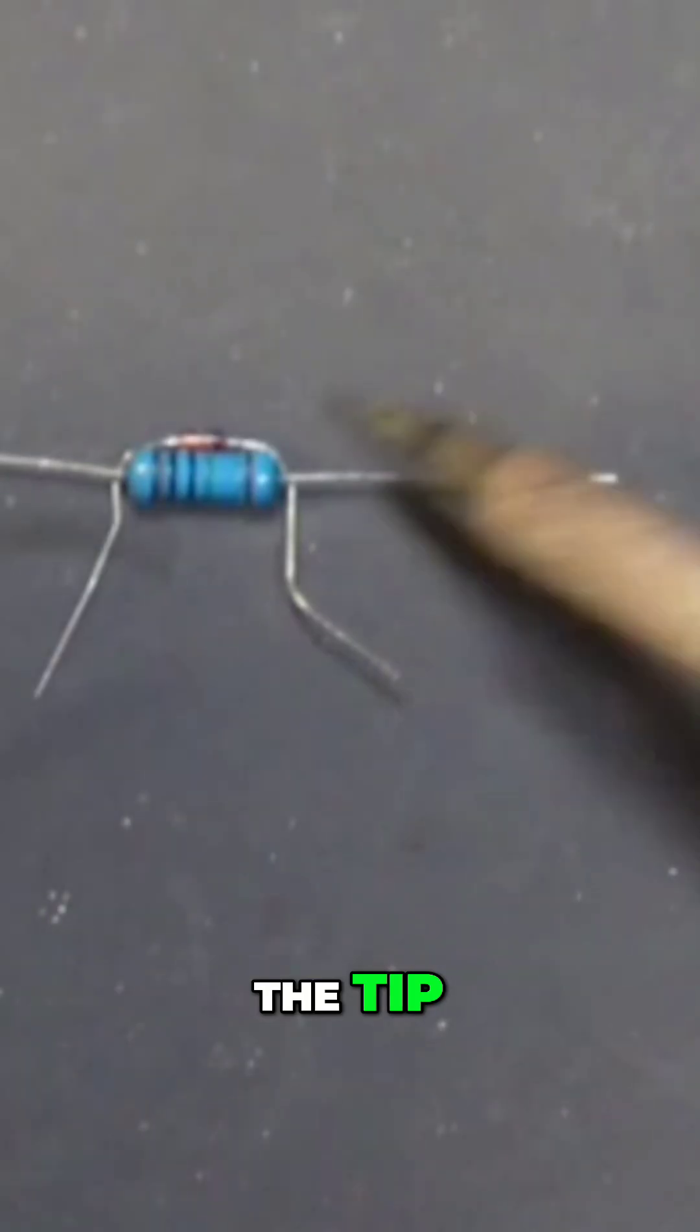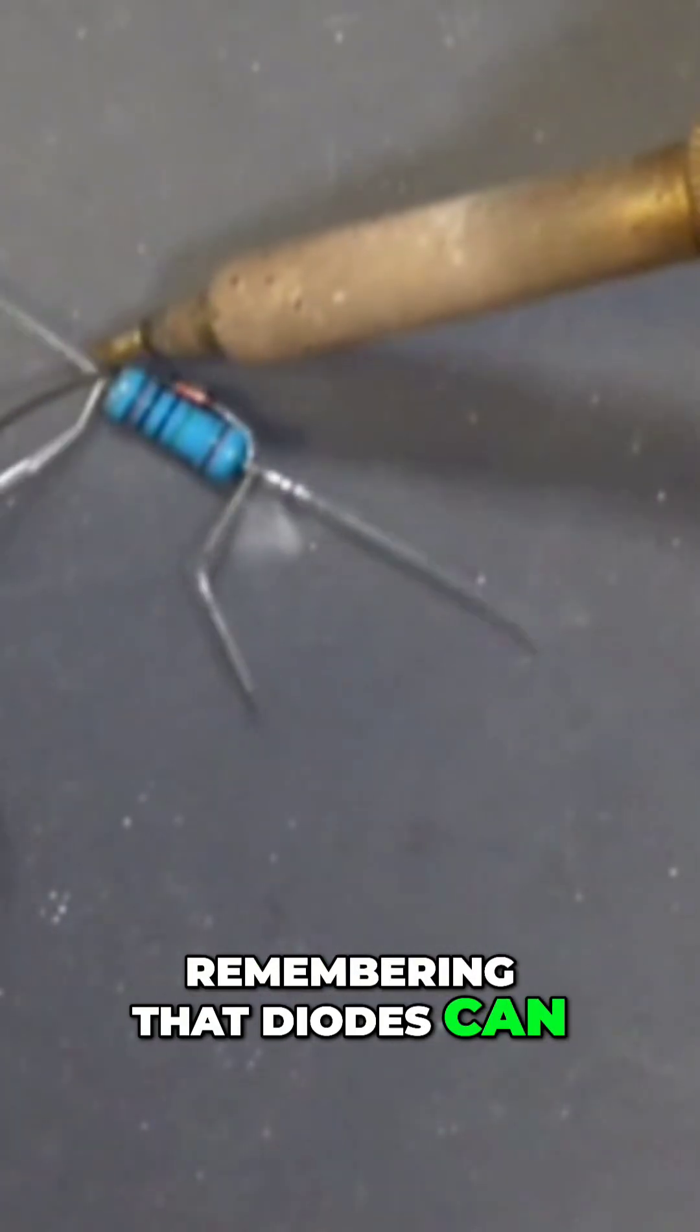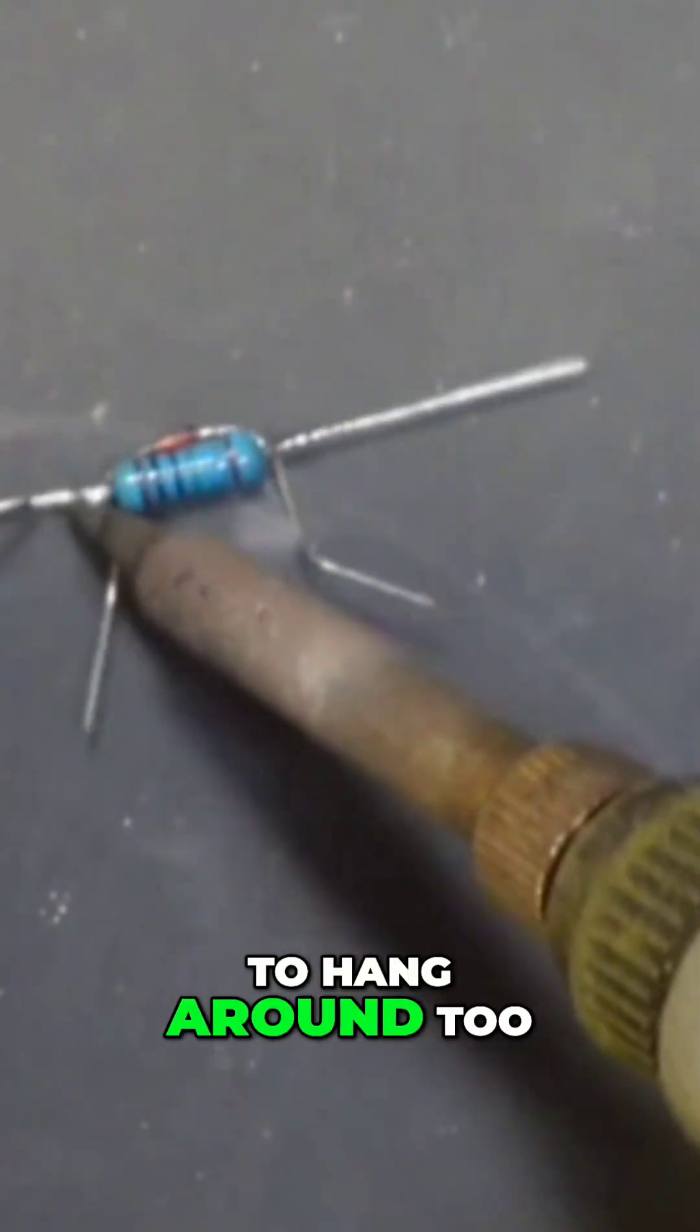If we wet the tip, we can just solder each side of this diode. Remember that diodes can be sensitive to heat, so you don't want to hang around too long.